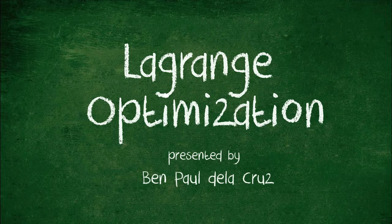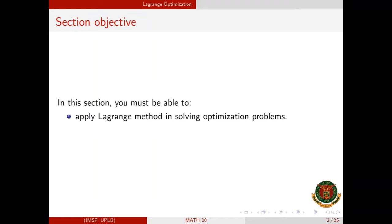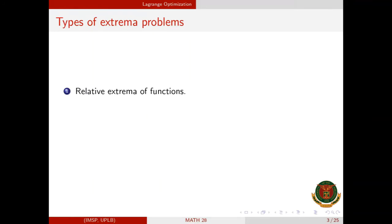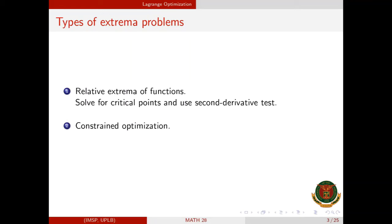Welcome to Math 28, Lagrange Optimization. In this section, you must be able to apply the Lagrange method in solving optimization problems. There are two types of extrema problems. The first is relative extrema functions, where we find critical points and use the second derivative test to determine relative maximum or minimum. The second is constrained optimization, where we use the Lagrange method.